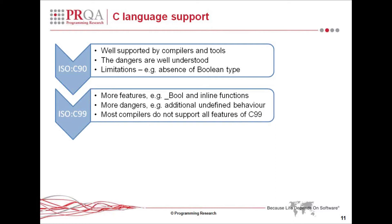The C99 standardization addressed some of those limitations by introducing type bool and inline functions. The problem with standardization is that often new features are added which are well worthwhile, but many of the dangers which were in the original version of the language are preserved. It's far easier to introduce new features than it is to eliminate dangers, and C99 for all its merits unfortunately has more dangers than C90.